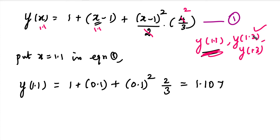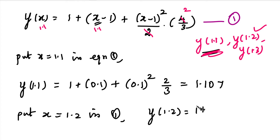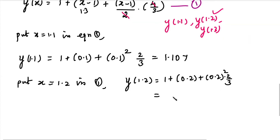For y(1.2): substituting x = 1.2 into equation 1, we get y(1.2) = 1 + (0.2) + (0.2)²·(2/3). Simplifying this gives the answer 1.227.